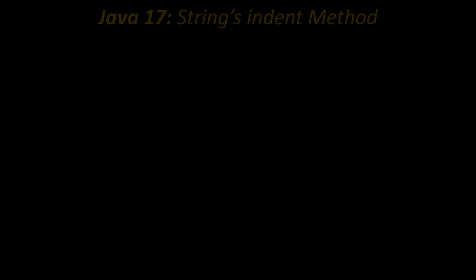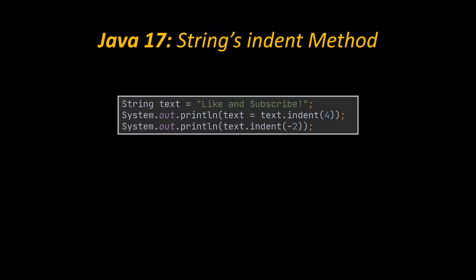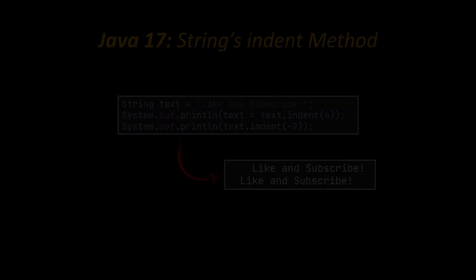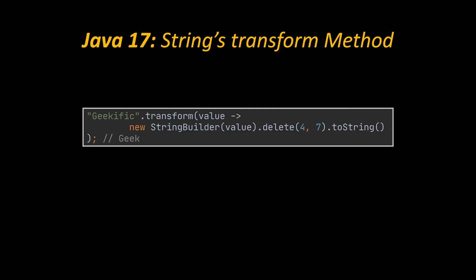I'm going to start with two methods added to the String class. The first one is indent — it adjusts the indentation of each line based on the integer parameter. If the parameter is greater than 0, new spaces will be inserted at the beginning of each line; if less than 0, it removes spaces from the beginning. The second new method is transform, which accepts a single-argument function as a parameter that will be applied to the string. In this example, we are using the transform method to apply the StringBuilder's delete method on our string.